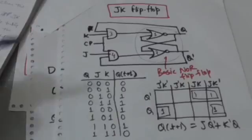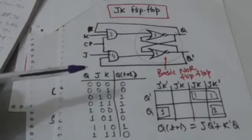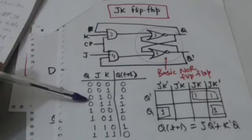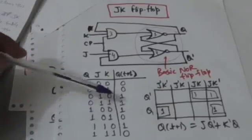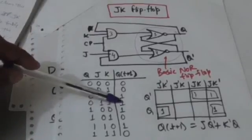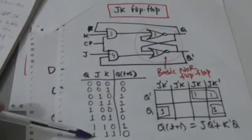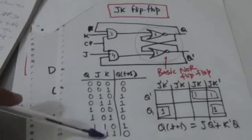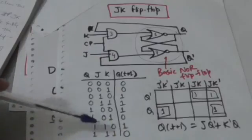When both J and K are equal to 1, the next state will be the complement of the present state. Here, the present state is 0 and J and K are both equal to 1, so the next state will be 1, which is the complement of the present state. Here, the present state is 1 and J and K are both 1, so the next state will be 0, which is again the complement of the present state.